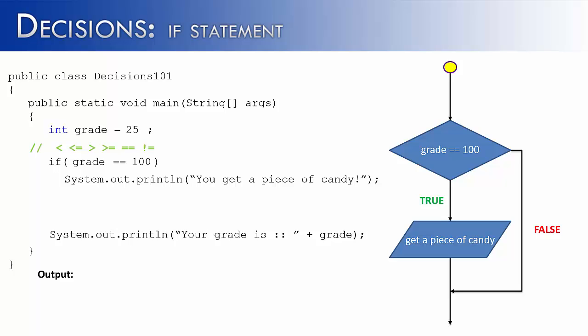Now let's say that a person made a 25 on the test. Would they get a piece of candy? Well no, it would come to the conditional, find out that it's false, and it would ignore the code within the if statement and go on to say your grade is 25. It doesn't mention anything about candy. It just ignores that statement.